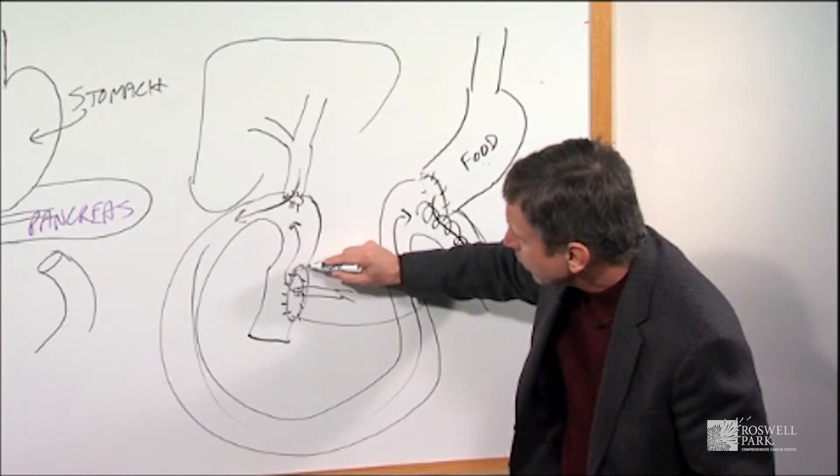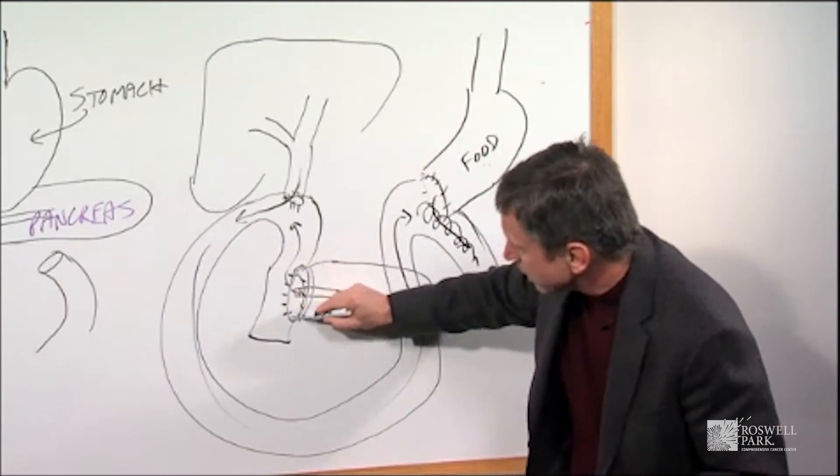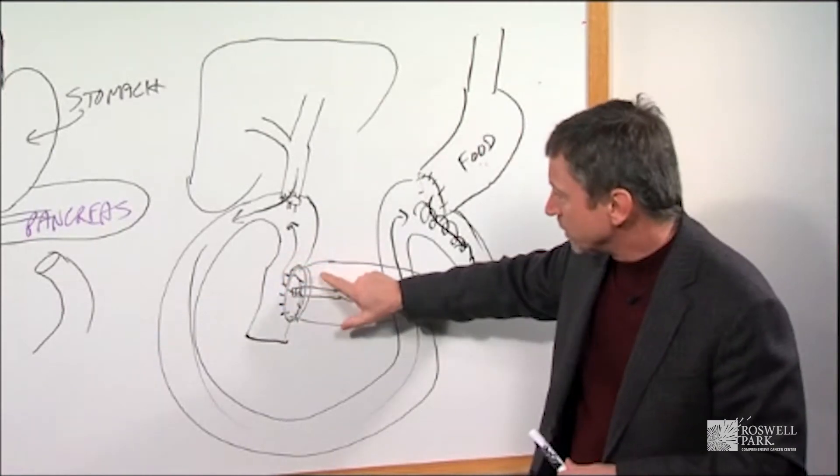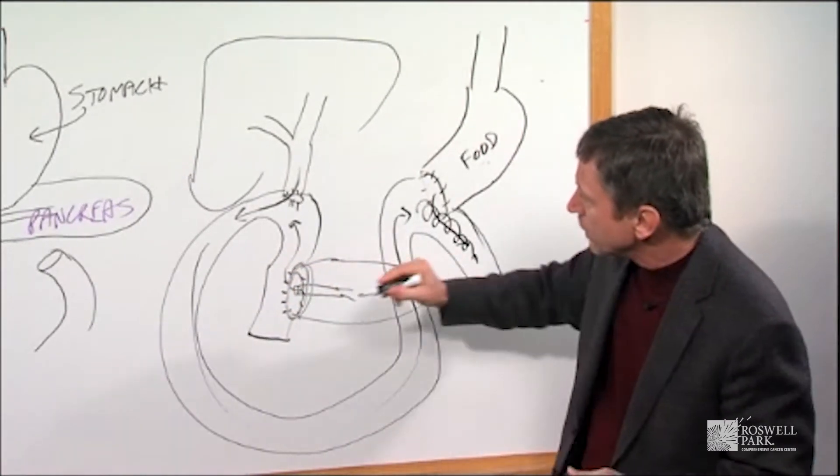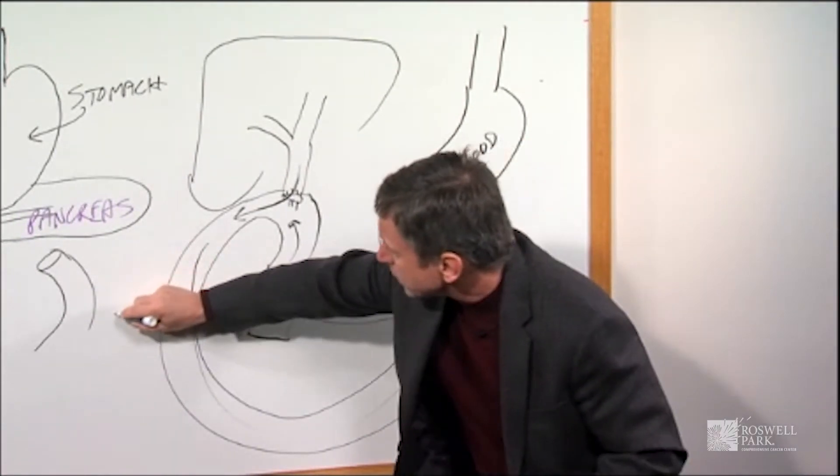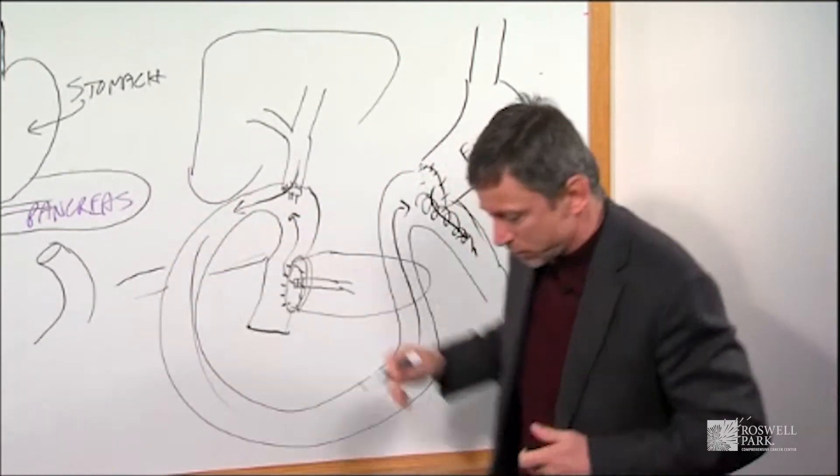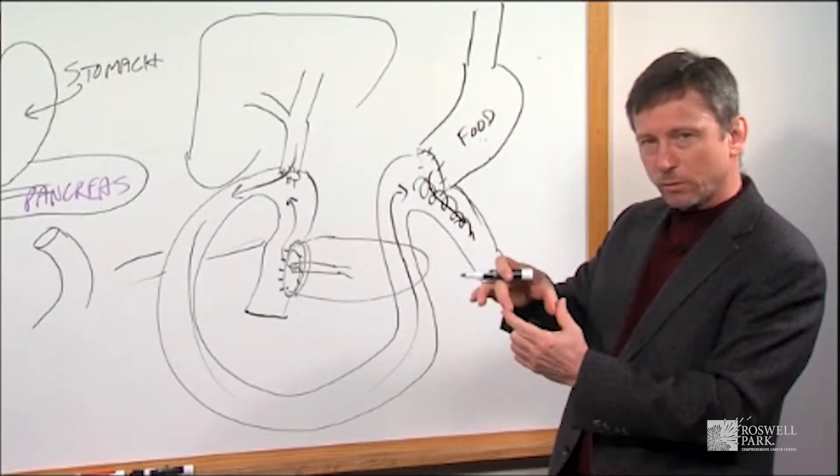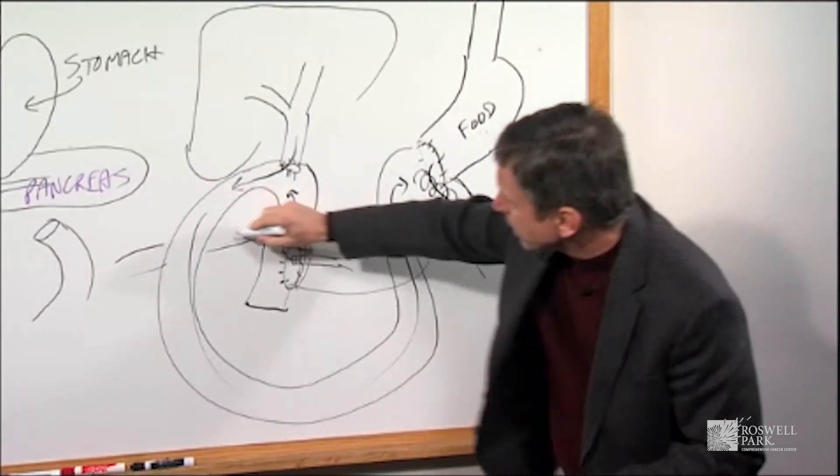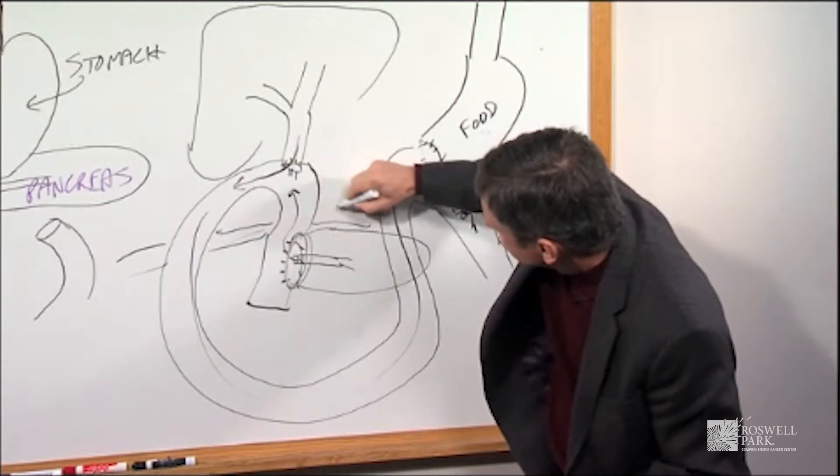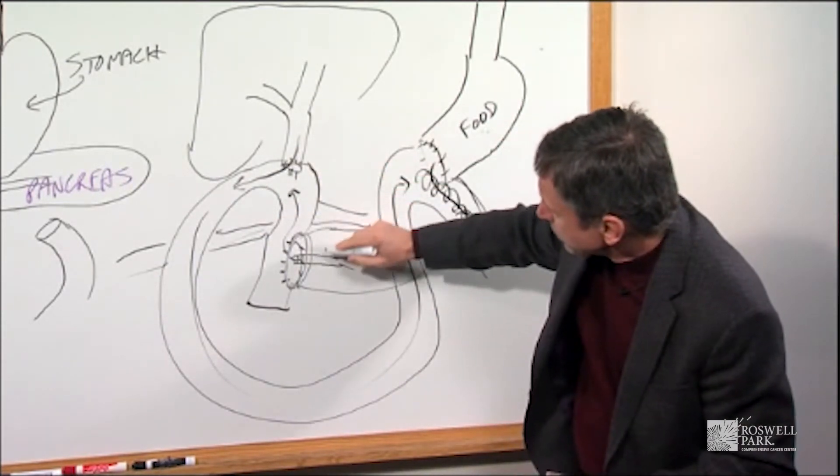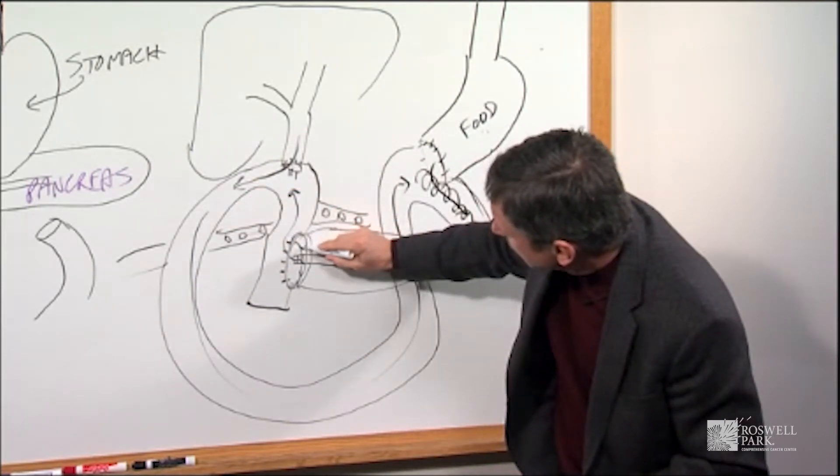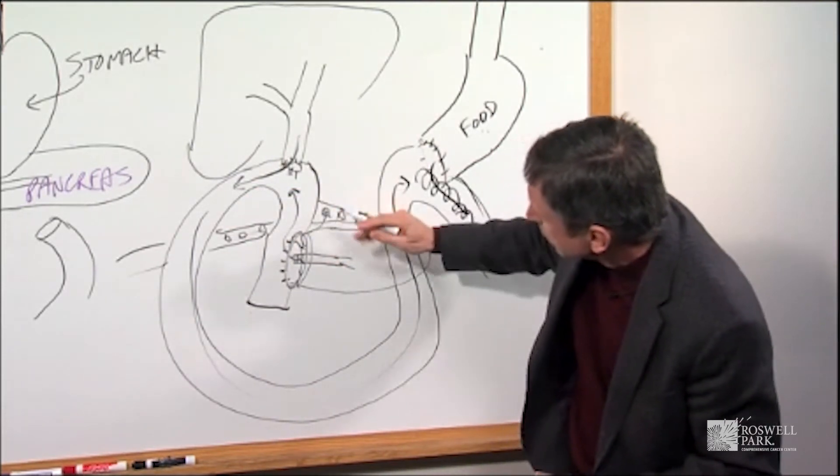But one of the most problem areas we have, because the pancreas is very soft and you have to sew it to the intestine, we can get leaks from this area. About 15 to 20% of the time we will get a leak from this area. And what we do at the time of surgery is we put a drain in that comes out of your right side. There's generally a single drain hooked up to a little bulb, a little plastic bulb.